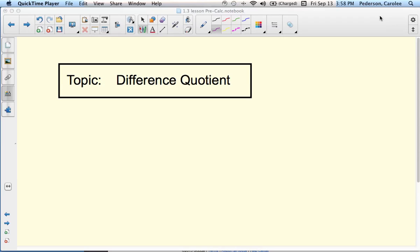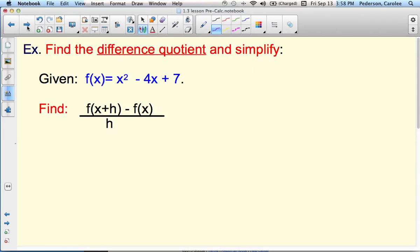This video focuses on the difference quotient. There's one example in this video. We want to find the difference quotient and then simplify it. So what we give you is the blue function, it's a quadratic function x squared minus 4x plus 7. And we want to find out what is f of x plus h minus f of x all over h.